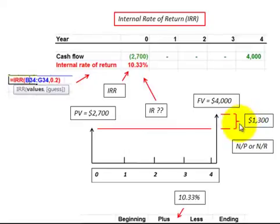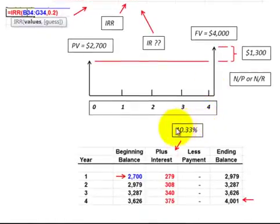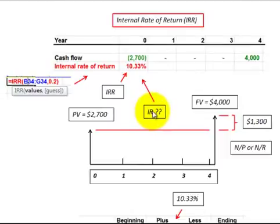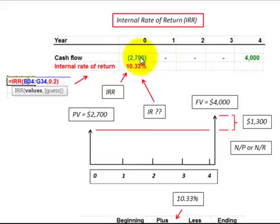We have to account for that $1,300 on the exchange of that notes receivable or payable. So what we have to do is determine the interest rate so we can amortize the interest expense or revenue over the life of that loan. To calculate the interest rate, we use the internal rate of return function. Looking at the cash flows: we made an investment of $2,700, and then at the end of year four we got a return of $4,000.